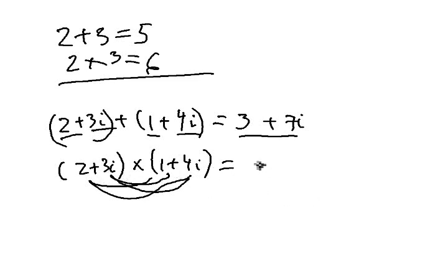So this is 2 times 1, 2, plus 2 times 4i, 8i, plus 3i times 1, 3i, plus 3i times 4i. And I will just write that for now, 4i times 3i.